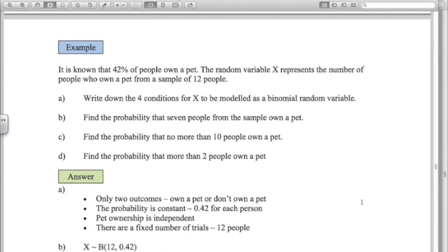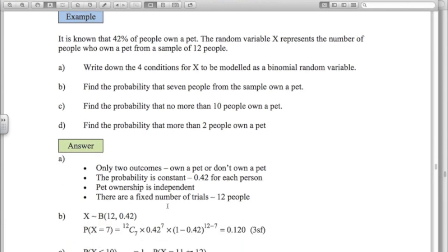Find the probability that 7 people from the sample own a pet. So X is binomial distribution. N is 12. P is 0.42. I'll put the numbers in the formula. Gives me 0.120.